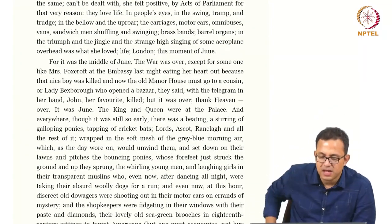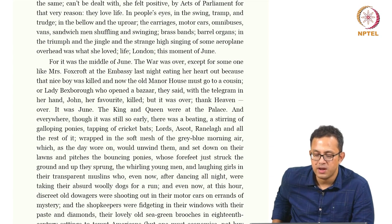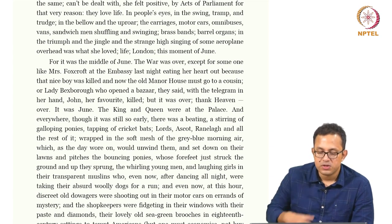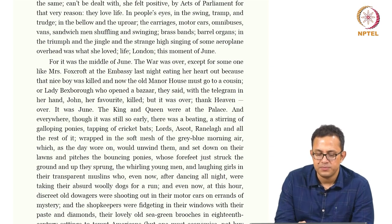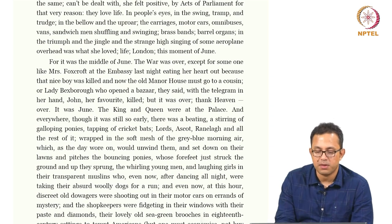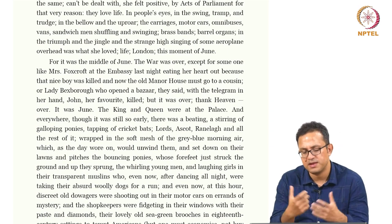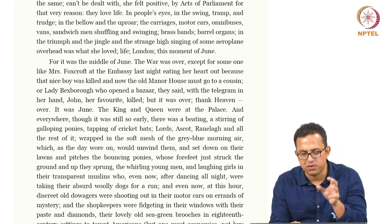'So it was June, the king and queen were at the palace, and everywhere, though it was still so early, there was a beating, a stirring of galloping ponies, tapping of cricket bats, Lords, Ascot, Ranelagh, and all the rest of it.' Again all this very masculinist metaphor is important — stirring of galloping ponies suggests velocity and movement, and tapping of cricket bats are examples of masculinist sports. Lords could obviously be the cricket venue.